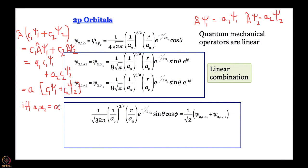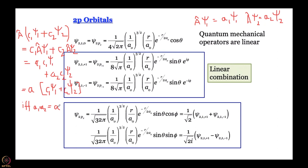So this is our familiar ψ(2px) orbital. Similarly, if we subtract one of these orbitals from the other — with (1/√2 · i) in the denominator — we get sin θ sin φ, and since r sin θ sin φ = y, this is your 2py orbital.